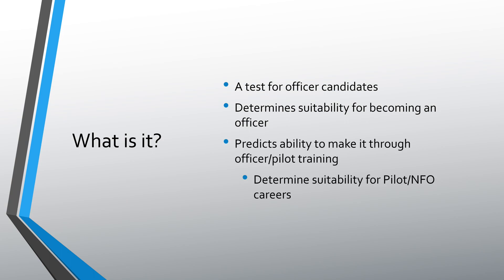The ASTB is the Aviation Selection Test Battery. The E at the end is for electronic. So those of you that are taking this test overseas or in a place where you're fairly remote, you're going to get a paper copy. So some of the things I say on here will not apply to you. The E, you're going to be taking it on a computer. So it's a test for officer candidates. It determines your suitability for becoming an officer. So the higher your score, basically the higher your probability of completing OCS. And then if you're wanting to do the pilot or NFO positions, it will determine your probability of getting through ground school for both of those things.